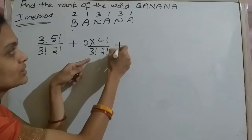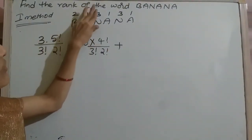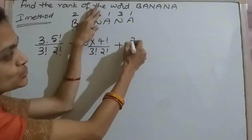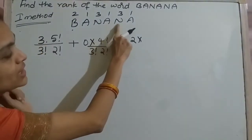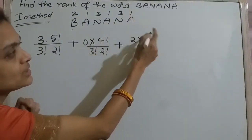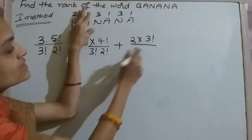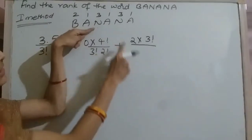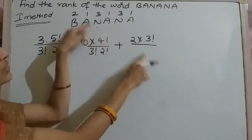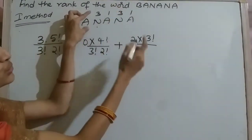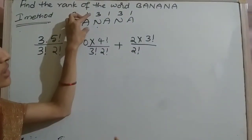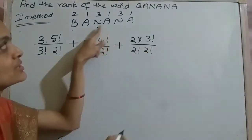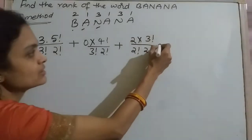Then for N, which has rank three — before three, how many lesser integers are there? Two ones: 1 and 2. So write two. How many digits are left? Three, so three factorial. In the denominator, write the repetition: three A's in 3! and two N's in 2!. There are two N's, so write 2! in the denominator.